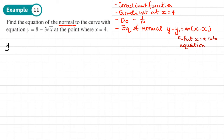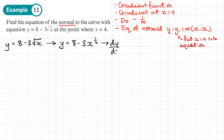Step one: find the gradient function. y equals 8 minus 3 root x. Before differentiating, we write it as 8 minus 3x to the power of a half, since that's the same as square root of x. Now dy/dx: constants disappear, and we do a half times 3, giving negative 3 over 2 times x to the power of negative a half.